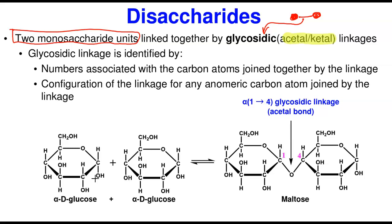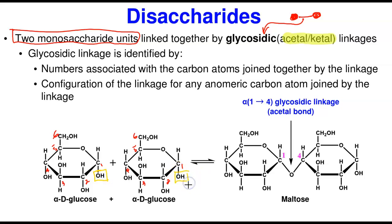Let's look at this structure. If I label this: one, two, three, four, five, and six — the same labeling applies to the second unit. Both of these are alpha-D-glucose because the OH group is pointing downward. They are two alpha-D-glucose units. The joining is from carbon number one of the left unit to carbon number four of the right unit.